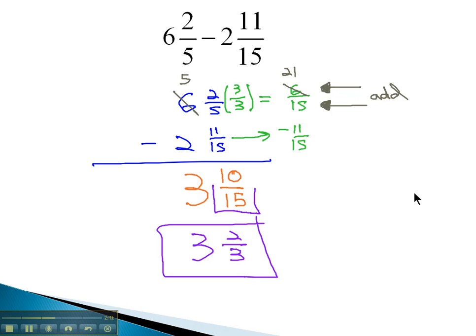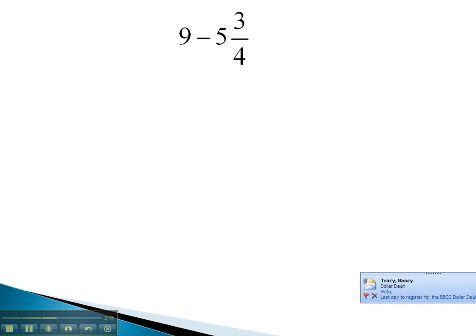Let's try another interesting problem which requires borrowing. Here we have 9 minus 5 and 3 fourths. When we line up 9 minus 5 and 3 fourths,